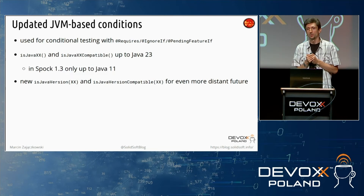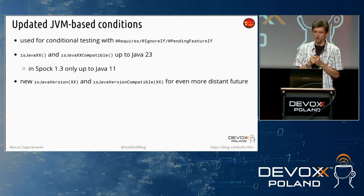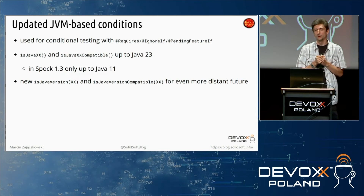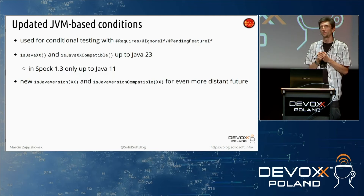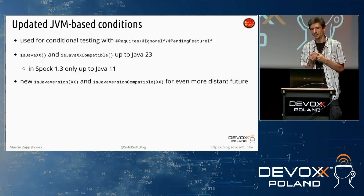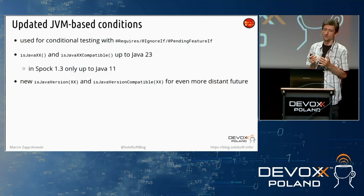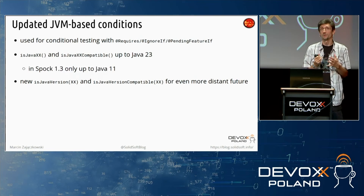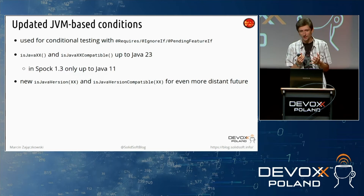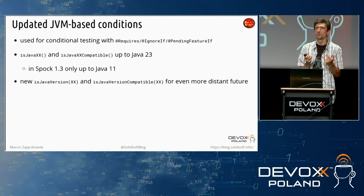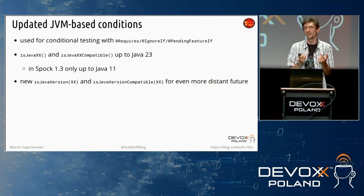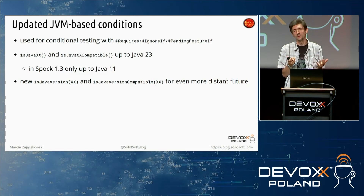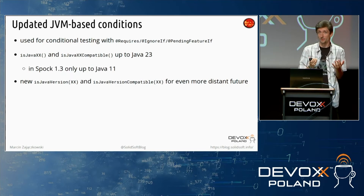Another useful change is related to all conditional test execution extensions. In Spock, there are utility methods to make it easier to run — or not run — a given test with a particular Java version. In Spock 2, we upgraded the versions to support up to Java 23, the next LTS. There are also new methods to refer virtually to any Java version you can imagine in the foreseeable future.